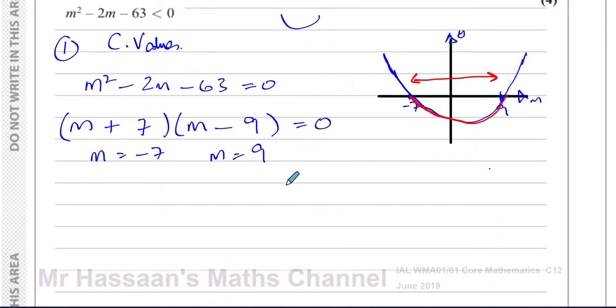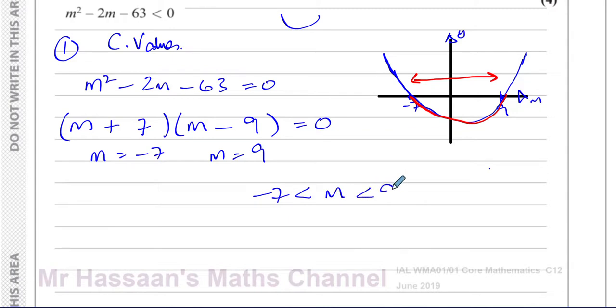So the inequality M squared minus 2M minus 63 less than 0 is satisfied when M is between negative 7 and positive 9. That's the solution to this inequality.